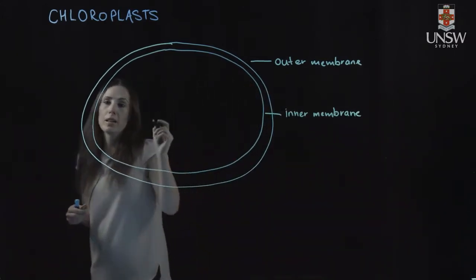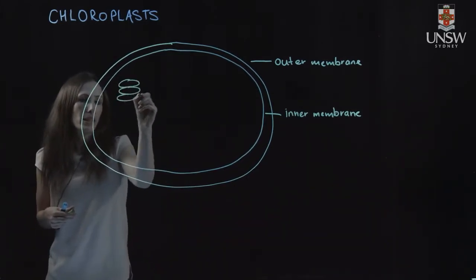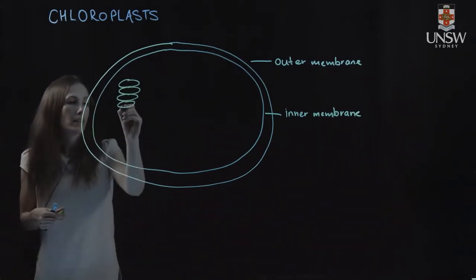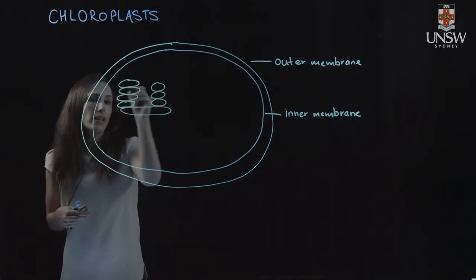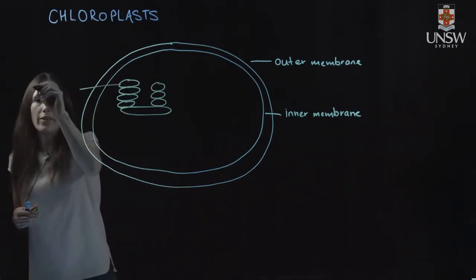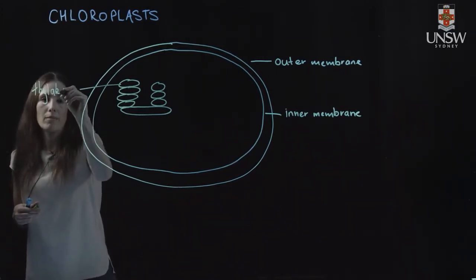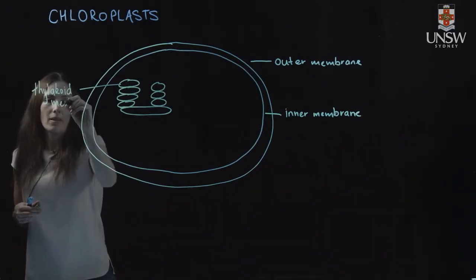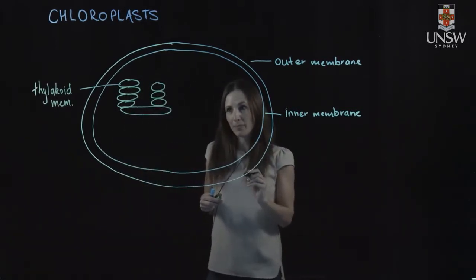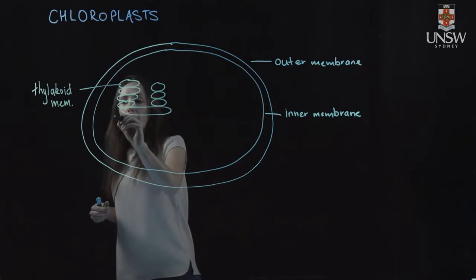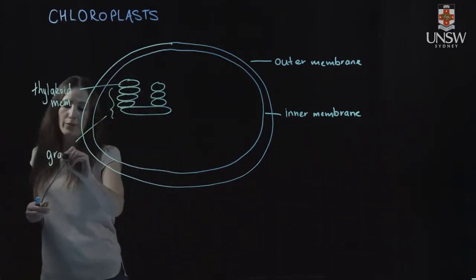Now, within chloroplasts, we have another membrane, and this forms these particular structures like stacks. And these stacks can be connected to each other. So they can form like this. So these membranes are called thylakoid membranes. And then the space inside is called the thylakoid space. And these stacks of them together are called grana, or granum, if you've got one.